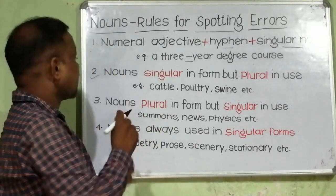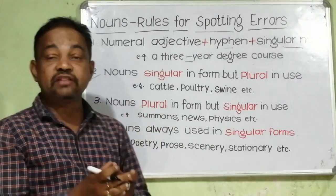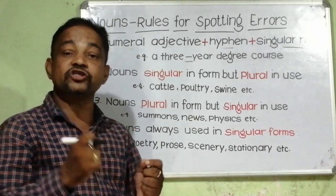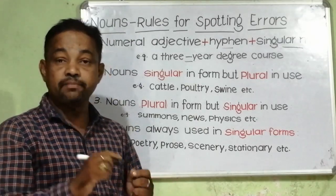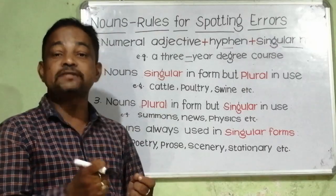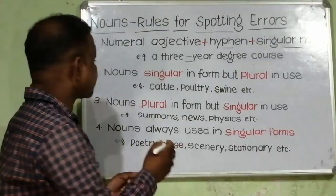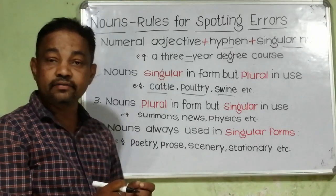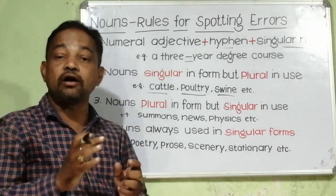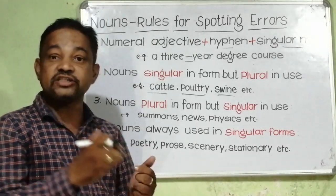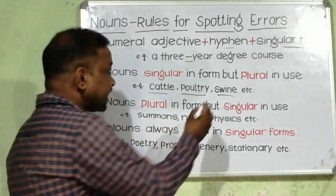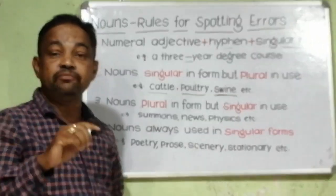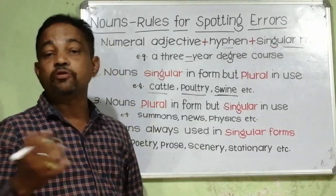Rule number two: nouns singular in form but plural in use. There are some nouns that look like singular nouns but they are used as plurals. For example, tarot, falchery, swine. These are plural countable nouns but they look like singular. One thing to note: swine can be used as singular as well as plural.